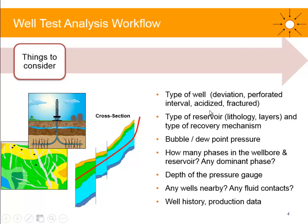We need to look at the type of reservoir — the lithology and the layers. Are we dealing with a sandstone reservoir or carbonate? If it is a carbonate, we might expect some natural fractures and maybe some changes in reservoir properties according to changes in fracture density. We might have multilayers — is there any contrast in permeability, reservoir properties, or thickness between these different layers? Have we got some layers which are not perforated? This could add some multilayer effect.